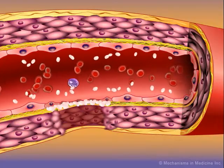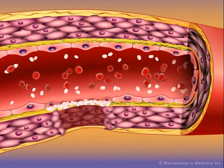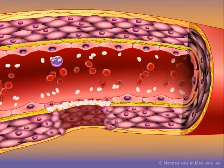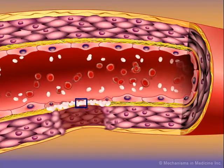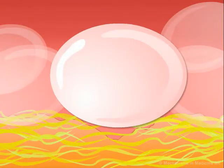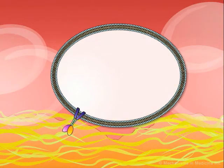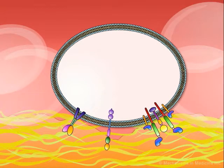Collagen is one of the most thrombogenic components of the subendothelial matrix responsible for the initiation of platelet adhesion. A number of adhesive receptors on the platelet surface membrane interact either directly or indirectly with collagen.